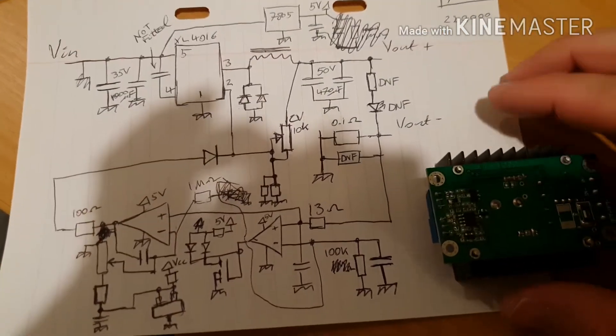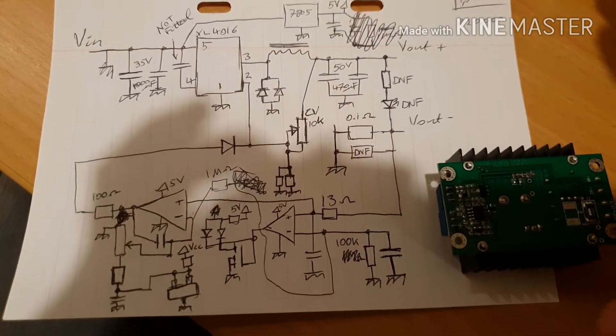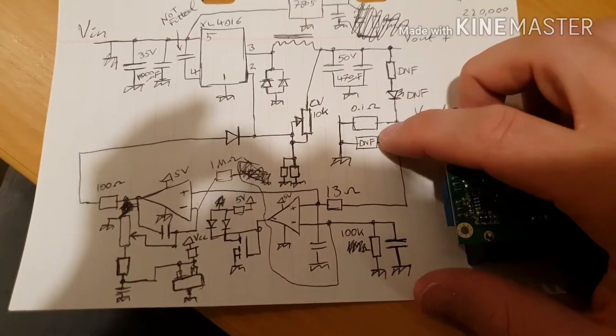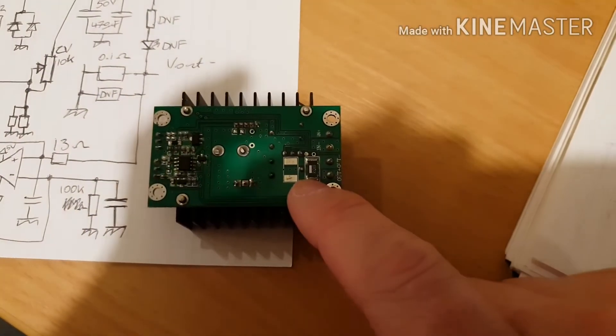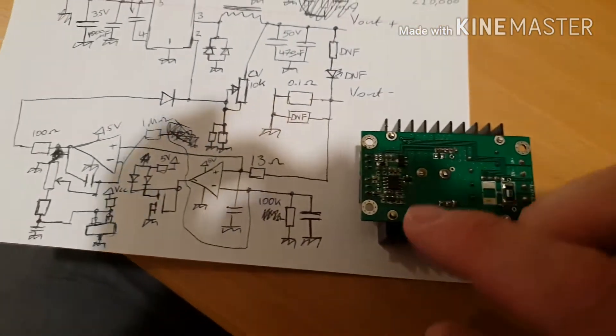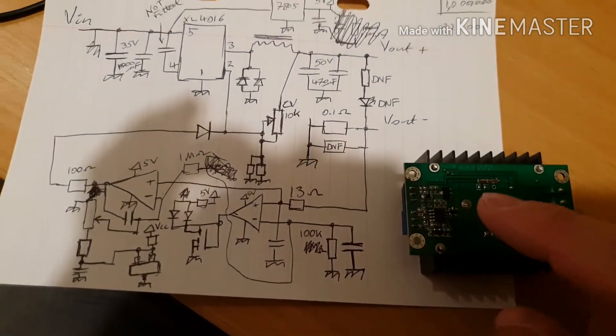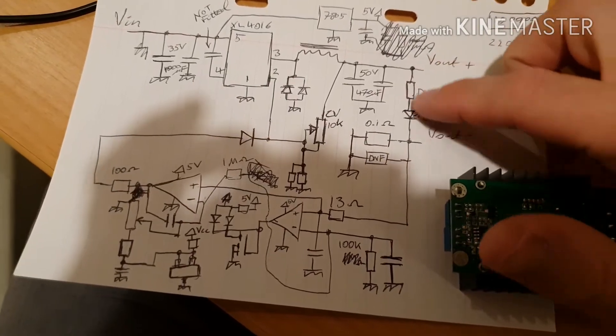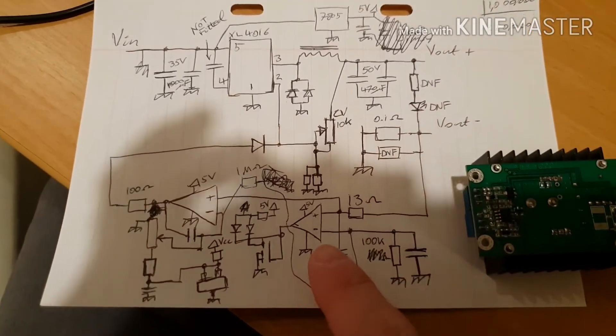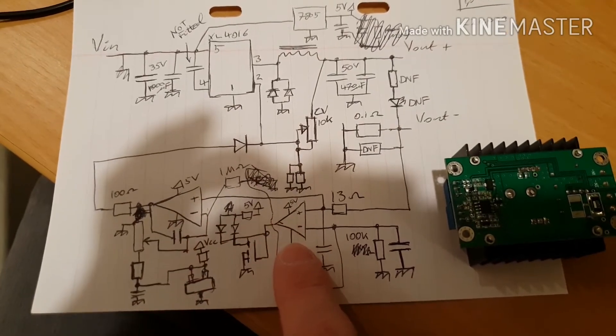Their constant current element to this circuit is actually done here. They've got a 0.1 ohm resistor right here, a pretty beefy one on the underside of the board on the negative, on the return. As current is drawn on the output, it will develop a voltage across this resistor which is sensed by these two op amps and they do different things.